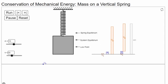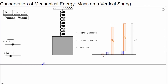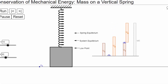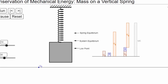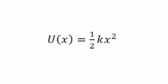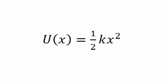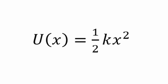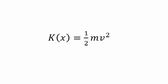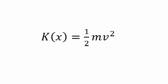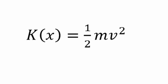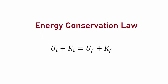When a spring is extended or compressed, the potential energy of the system increases proportionally to the amount of change in the length of the spring. We can express this potential energy as kx squared divided by 2. Also, the kinetic energy of a moving object with a speed of v can be found as mv squared divided by 2.